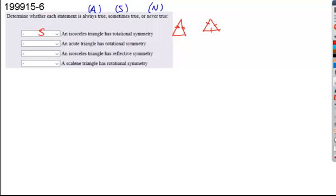And what about an acute triangle has rotational symmetry? It can. Here's our example. It also may not. So here's our counter example. We have both, so it would be sometimes.